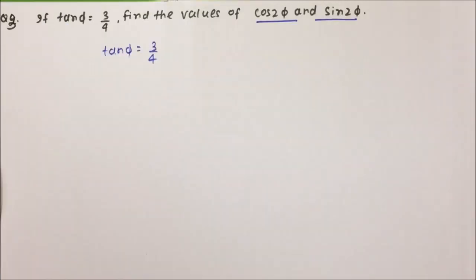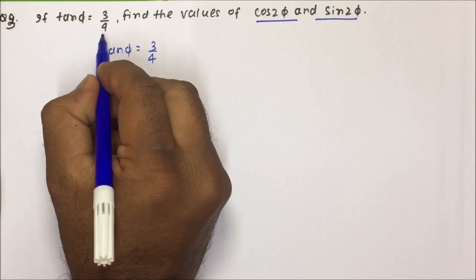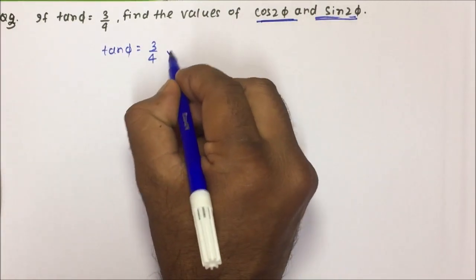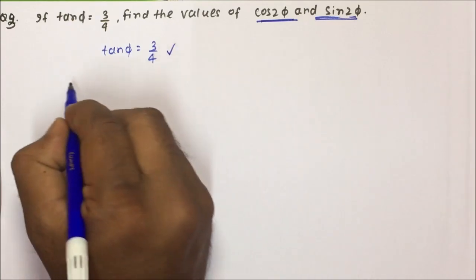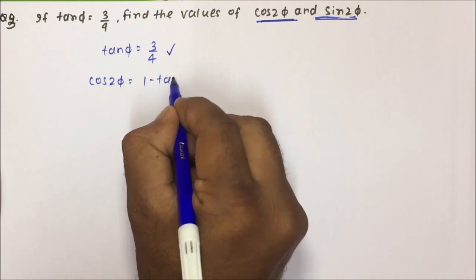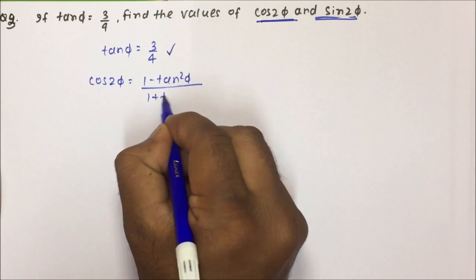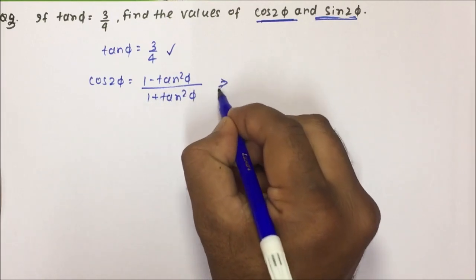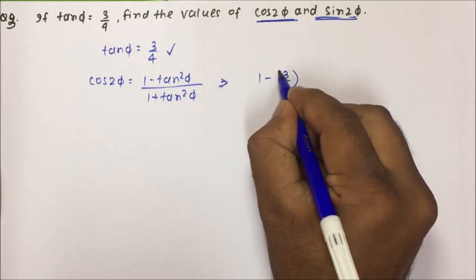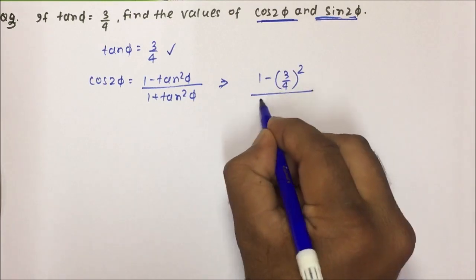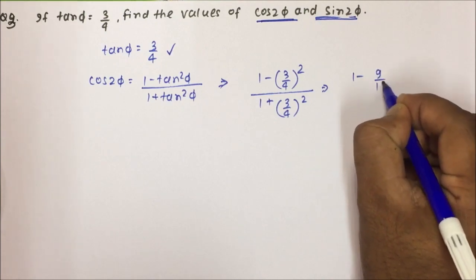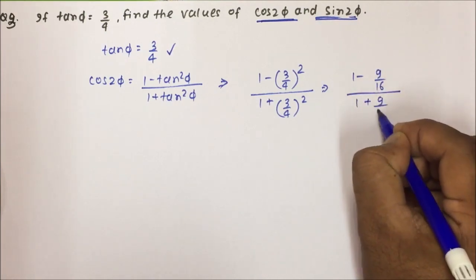Moving towards Question 3: if tan φ = 3/4, find the values of cos 2φ and sin 2φ. The formula for cos 2φ is: cos 2φ = (1 − tan²φ) / (1 + tan²φ). This is a formula you have to either note down or keep in mind. Since tan φ = 3/4, we get tan²φ = (3/4)² = 9/16. So: (1 − 9/16) / (1 + 9/16).